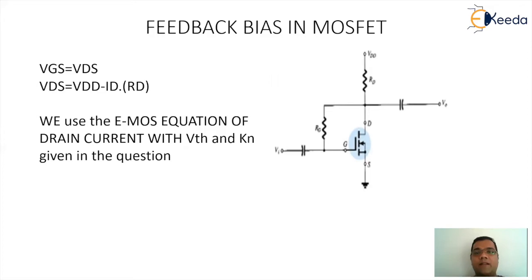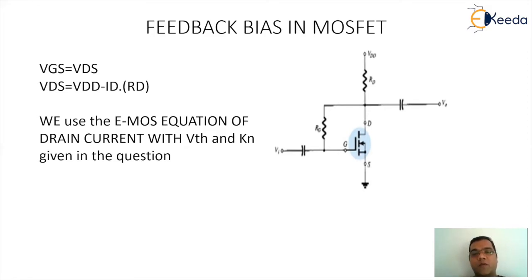In the feedback bias arrangement, VGS equals VDS because there is no current flowing in the RG resistance. This is because the E-MOSFET has gate insulation, so the current going into the gate terminal is essentially zero. We use the E-MOSFET equation to get the value of ID, and applying KVL to the output loop gives VDS equal to VDD minus ID·RD. The important parameters for E-MOSFET are the threshold voltage VTH (or VT) and the conduction parameter KN.